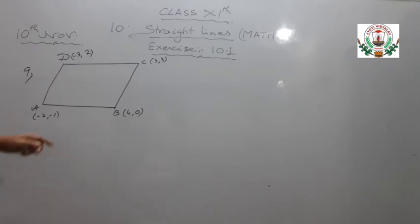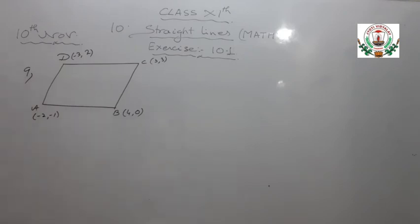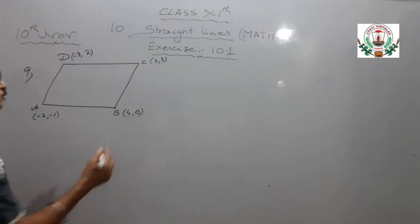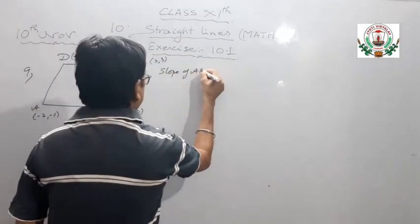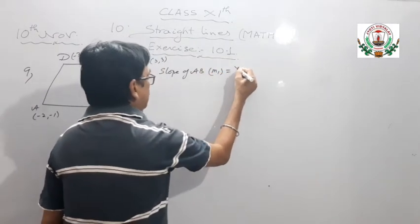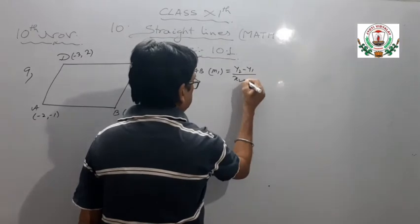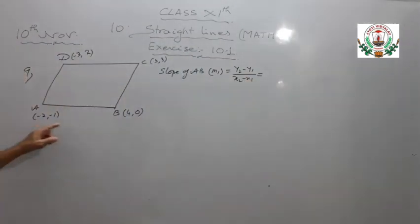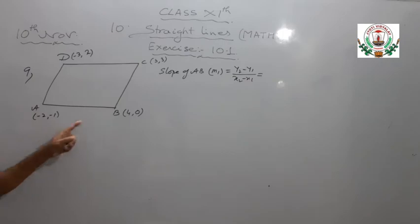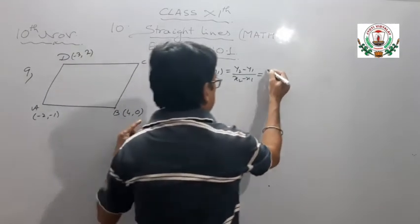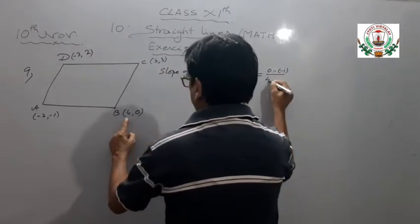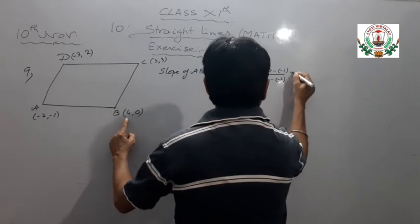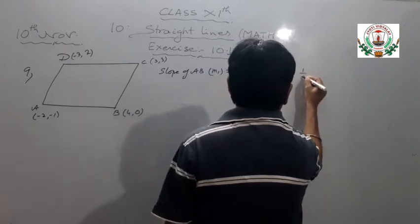Since we know that in a parallelogram the opposite sides are parallel to each other, and in case of parallel lines the slopes are equal. So first I am going to calculate the slope of AB. Slope of AB, that is M1, equals Y2 minus Y1 upon X2 minus X1. So for AB: 0 minus (-1) upon 4 minus (-2), that is 1 upon 6.